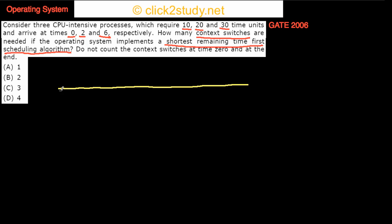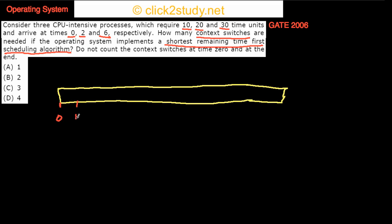Let's set up a timeline. We mark time points: 0, 1, 2, 3, 4, and then 6 and so on. There is a process arriving at time 0, another arriving at time 2, and another at time 6. We run them in order of shortest remaining time. The first process arrives at time 0 and needs 10 units.